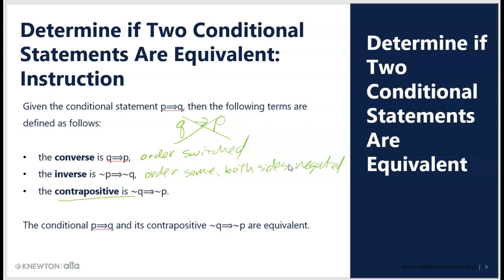The contrapositive is where I negate both and switch sides — this one actually is equivalent to the conditional. If I negate both and switch the order: if not Q, then not P. So 'if the truck is not red, then it is not Tom's' — that makes sense. If Tom only owns one red truck, the contrapositive means the same thing as the original. Only the contrapositive form is equivalent to the conditional.